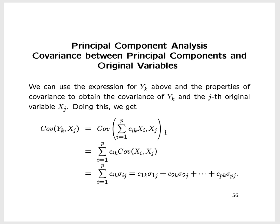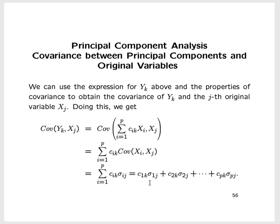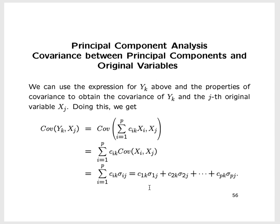Using those properties, the covariance between the kth principal component and the jth original variable is given by a linear combination of the entries in the jth column of the covariance matrix Σ. The coefficients c_1k, c_2k, and so forth up to c_pk are the coefficients in C_k. This is a very nice and useful formula for the covariance between the kth principal component and the jth original variable.